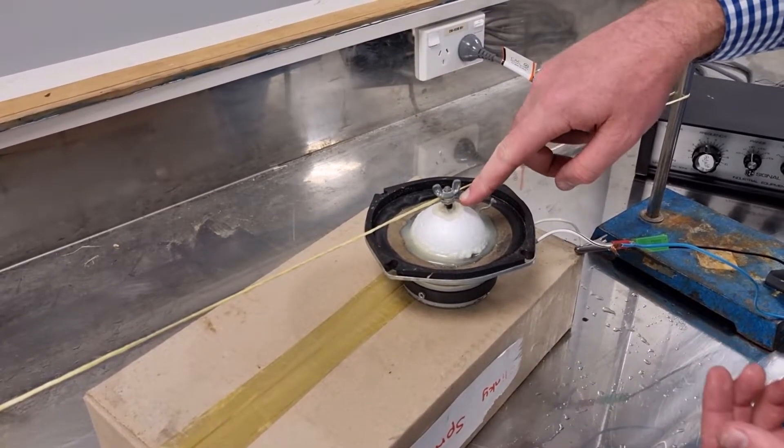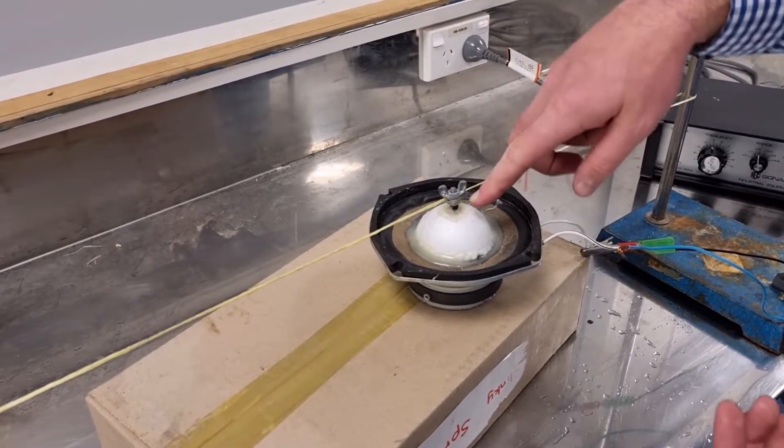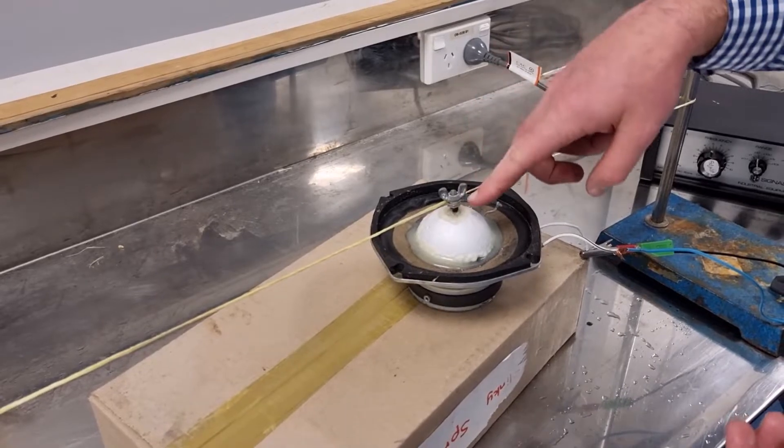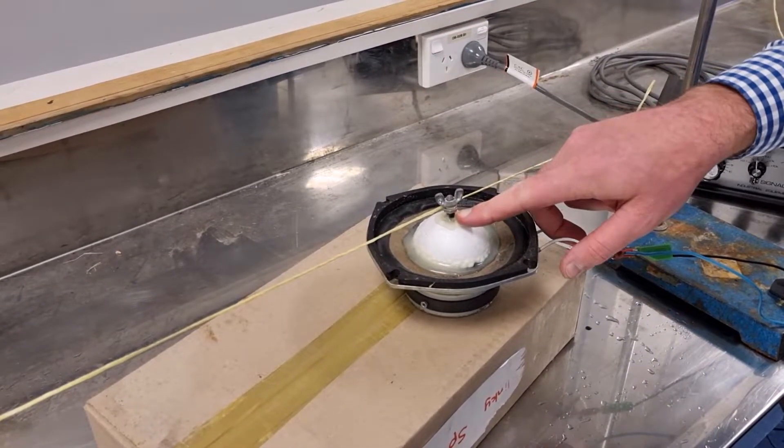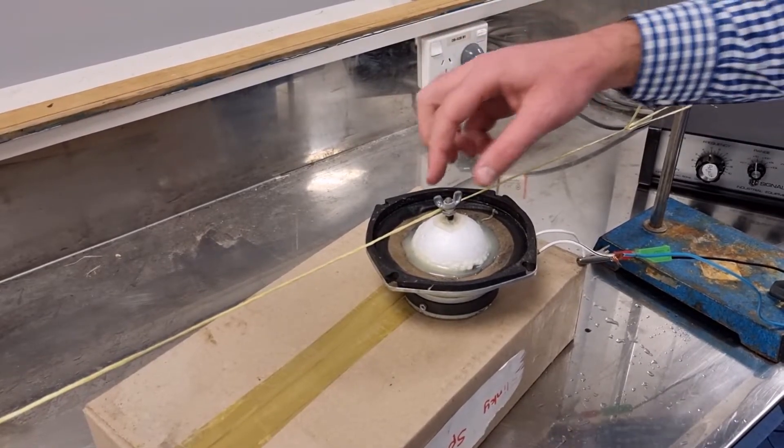And then what I did is I drilled out a hole through the center and then filled it with hot glue and then dropped a bolt in, and then there's a nut at the bottom and a wing nut on top, and that's to fasten a string to.